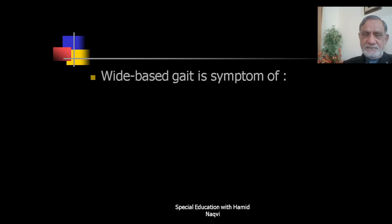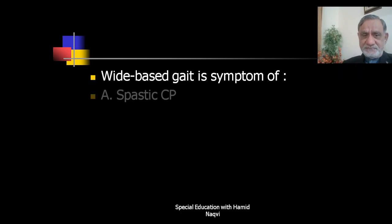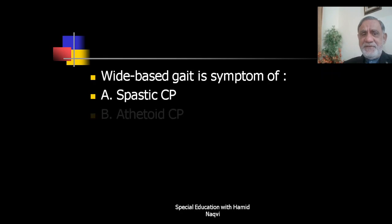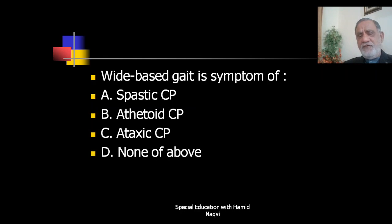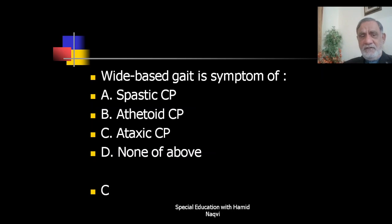Next question: Scissor-based gait is a symptom of — spastic CP, athetoid CP, athetoid CP, or none of the above? The correct answer is C — scissor gait is a symptom of athetoid CP.